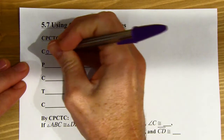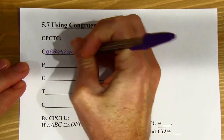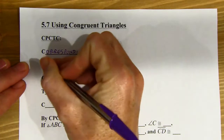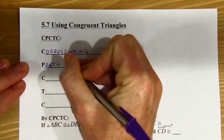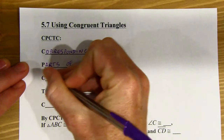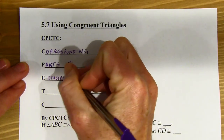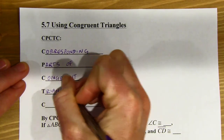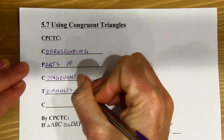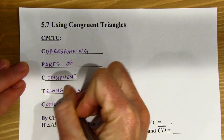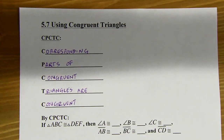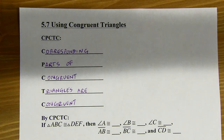C stands for corresponding. P stands for parts of. Corresponding parts of congruent triangles are congruent. It's used pretty commonly, so we use CPCTC often, just as a short form of that. All that means is that the corresponding angles are going to be congruent in congruent triangles, and the corresponding sides are going to be congruent.